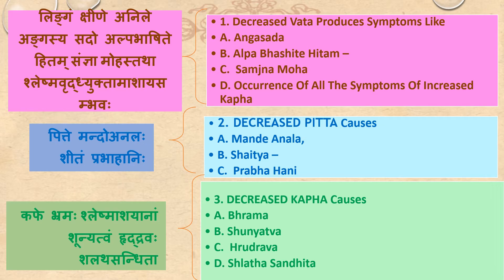Kapi Brahmaha, Sleshma Ashayanam Shunyatvam, Hridhrava, Shlada Sandhita. The decrease of Kapha causes Bhrama (giddiness), dilution, Shunyatvam (emptiness), Hridhrava (palpitation), and Shlada Sandhita (looseness of joints).